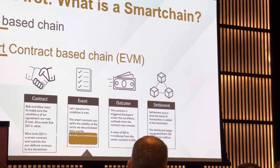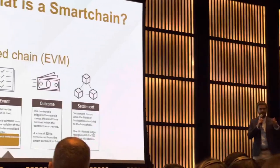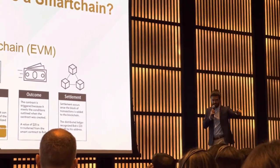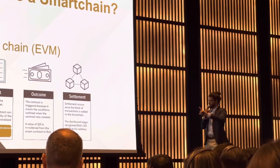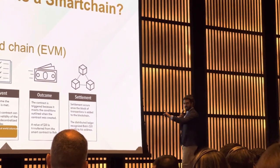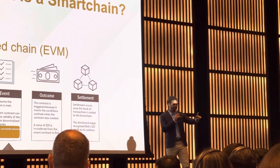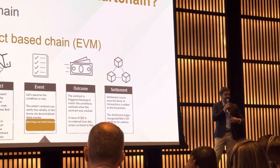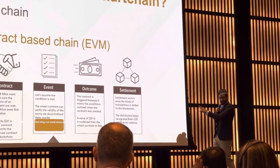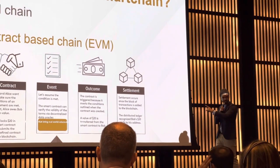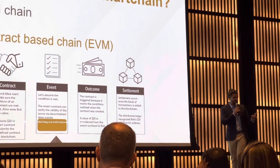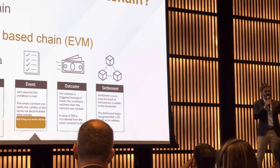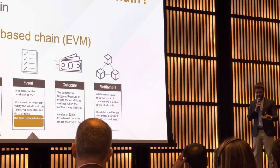If I'm negotiating with someone I don't know, I don't trust them — I need a third party to regulate this. But with the smart contract, I don't need to trust anyone in order to negotiate, because I'm safe. The ZNIC Smart Chain makes me safe. The ZNIC Smart Chain guarantees that whatever I'm doing, it will be executed the way it was intended.